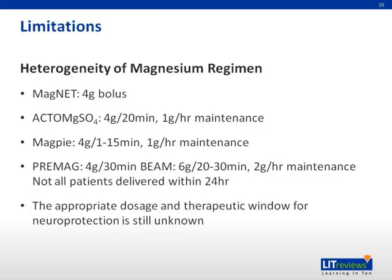The magnesium regimen used and actual dosage received varied between different studies and between patients within individual studies. Moreover, although most studies included women with anticipated delivery within 24 hours, not all patients delivered within that time frame, which raises the issue of the timing of magnesium sulfate infusion for fetal neuroprotection. Thus, the appropriate dosage and therapeutic window for neuroprotection is not known.